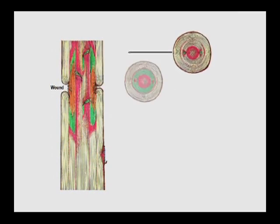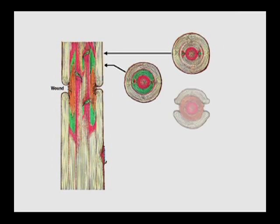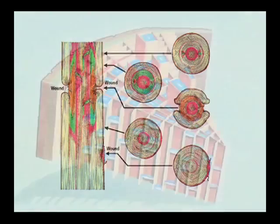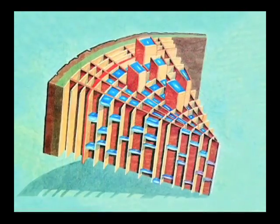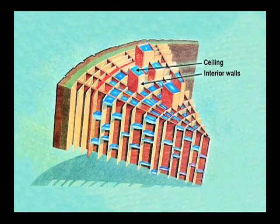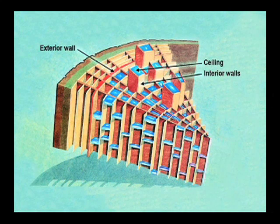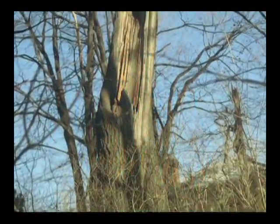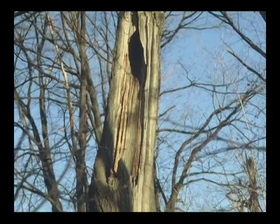Compartmentalization produces chemical and anatomical boundaries that vary in effectiveness to resist the spread of decay. The ceiling and floor and the interior wall are usually less effective than the exterior wall formed by new growth of xylem tissue. Thus decay tends to move in columns and back to the interior.